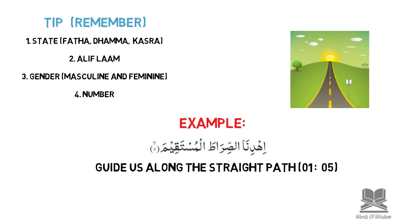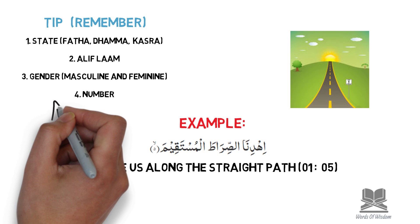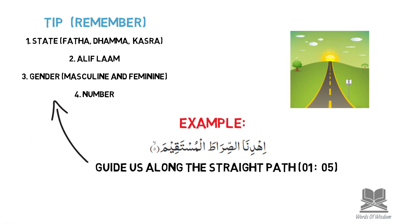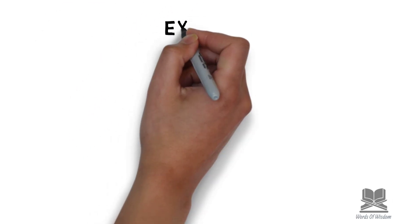Let's focus on 'al-sirata' and 'al-mustaqim' and apply the four rules. Number one, state: al-sirata has a single fatha, and al-mustaqim also has a single fatha — they match. Al-sirata has an alif lam before it, so al-mustaqim also has an alif lam — they match. Al-sirata is masculine and al-mustaqim is masculine — they match. Al-sirata is singular and al-mustaqim is also singular — all four rules are satisfied.